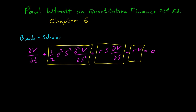The last term, minus r V, is a reactive term. The change in option price over time is directly proportional to the value of the option price right now. When changes are directly proportional to the value, the solution is exponential — just like the time value of money, where the rate of change is proportional to the interest rate, giving exponential growth or decay.